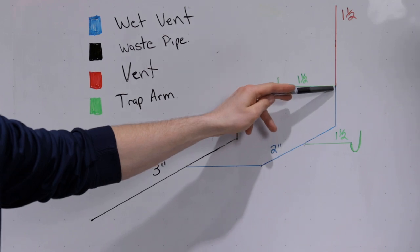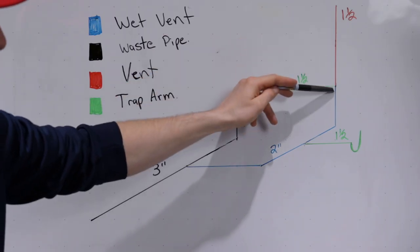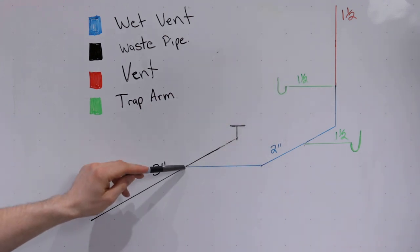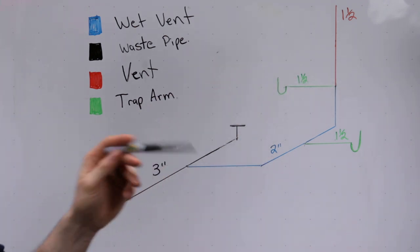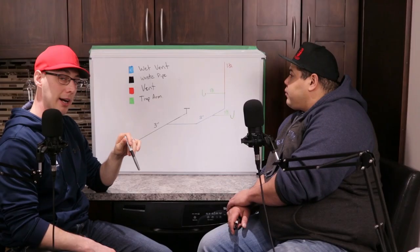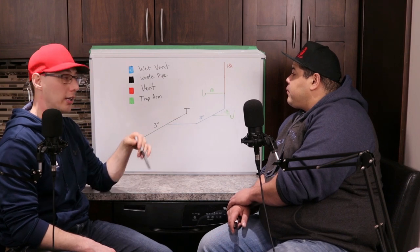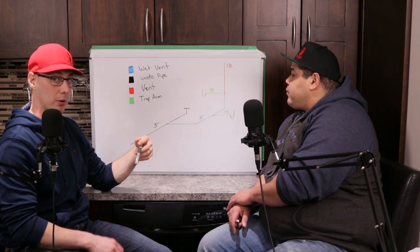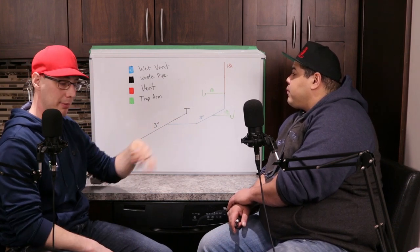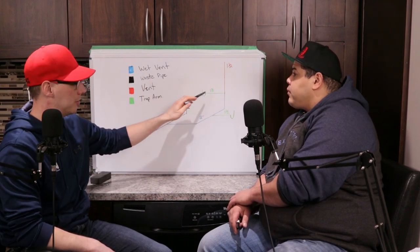Our wet vent begins at this section right here where this trap arm drains into here, and then this is our vent. This point here to this point here is going to be our wet vent, and there is no maximum - there's no limit to how long that can be. There's no minimum or anything. It can be a hundred feet - it just everything else has to meet the codes, draining in and size-wise.